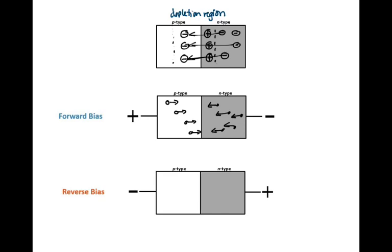If we reverse the positive and negative terminals, we get what's called reverse bias. In this case, the holes flow away from the junction toward the negative terminal, and the electrons flow away from the junction toward the positive terminal. We end up with an even larger depletion region, and no current flows through the material.